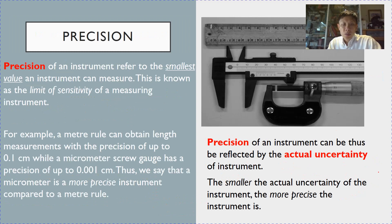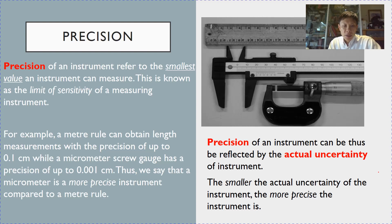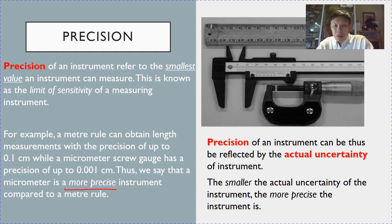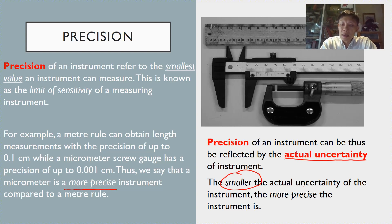For the last part of this section we talk about precision and accuracy of instruments. The precision of an instrument refers to the smallest value an instrument can measure. For example, a ruler has an uncertainty of 0.1 cm, while a micrometer screw gauge has a precision of 0.001 cm. Because the micrometer has a smaller uncertainty than the ruler, the micrometer is a more precise instrument. The smaller the uncertainty, the more precise the instrument.